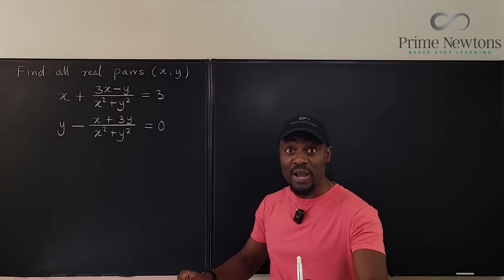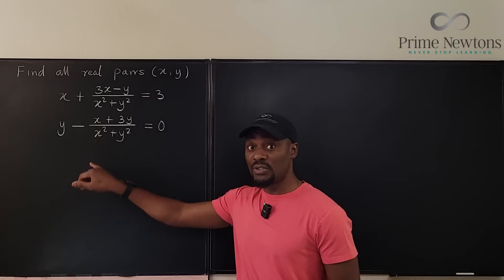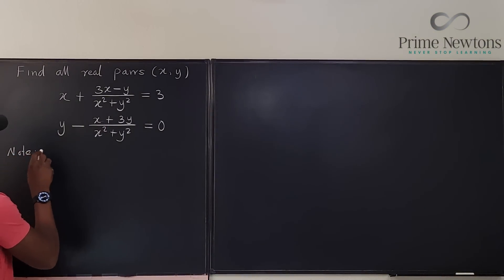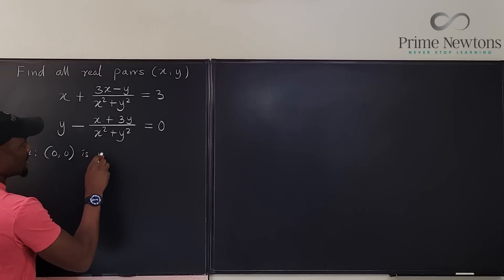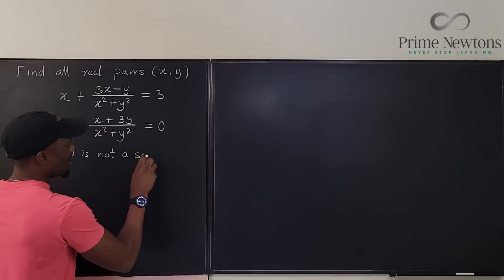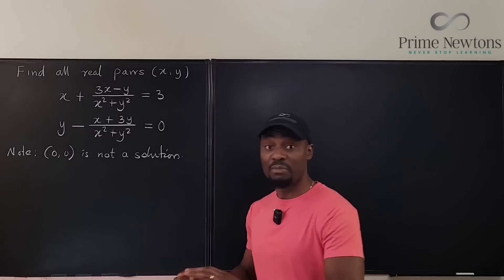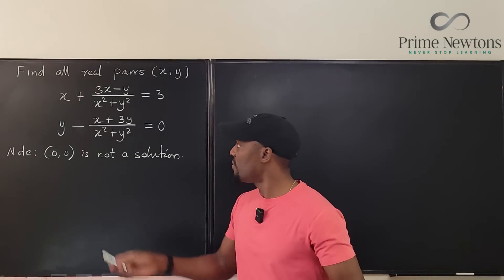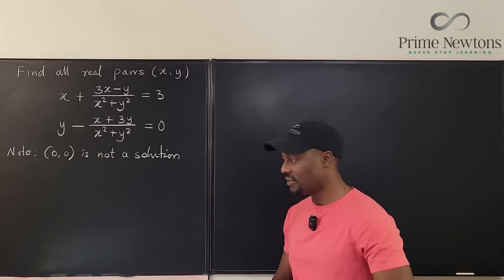Obviously, the solution cannot be X equals zero, Y equals zero, so I want to state that: note X=0, Y=0 is not a solution. It is impossible for X and Y to be simultaneously zero, because that would make the expression undefined. So we know that cannot be our answer, in case we get it in the future.